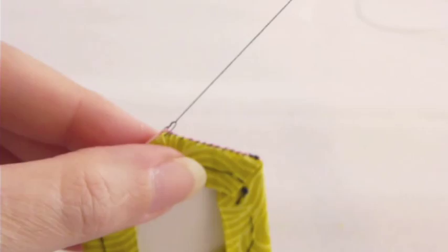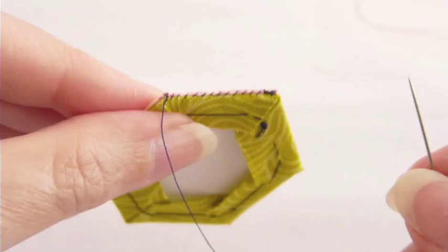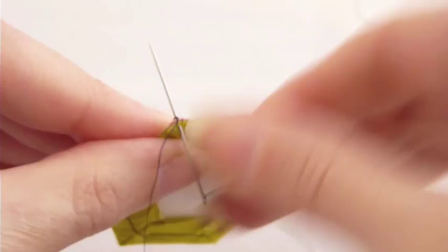I usually like to take just one last extra stitch through the edges of my patches, just to bury the end of the knot, and then go ahead and cut the thread very close to the knot, and you're all set.